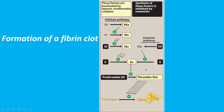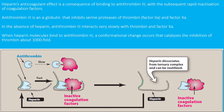Heparin has many actions, but its anticoagulant effect is a consequence of binding to antithrombin 3. Antithrombin 3 is an alpha globulin which occurs naturally in the blood, and it inactivates activated factor 2 and factor 10 to prevent excessive clot formation. So how does heparin inactivate these factors? By interacting with antithrombin 3.